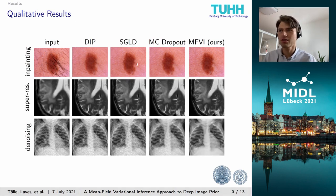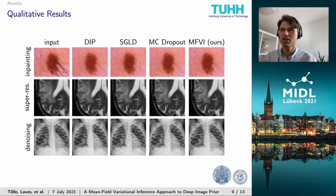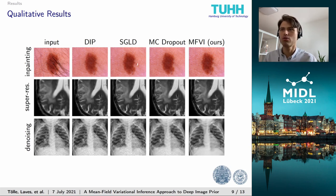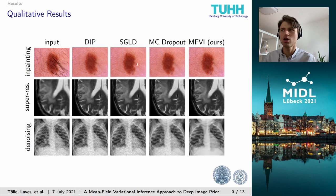On this slide, the results of one example image for each task are shown. In hair inpainting, our approach with mean field variational inference creates highly detailed images with no artifacts. In contrast, DIP, SGLD, and Monte Carlo Dropout overly smooth the image, which can be seen by a loss of skin texture. In super-resolution, crisp images can be created with our approach, while other methods overfit the low-resolution image. In denoising, again all baseline approaches overfit the noisy patterns, while our approach creates the most visually appealing result.